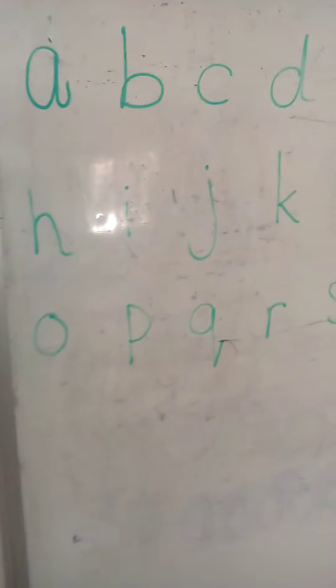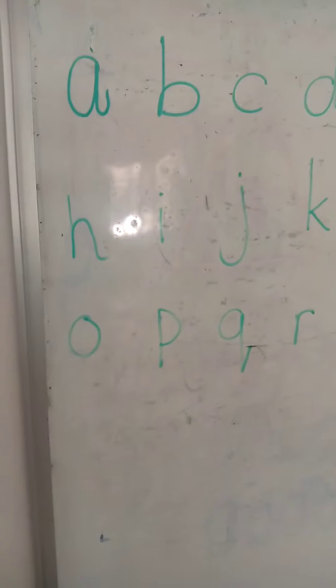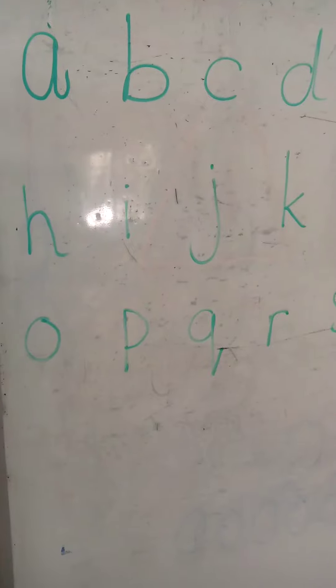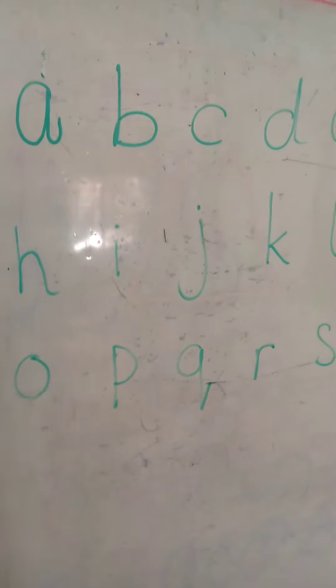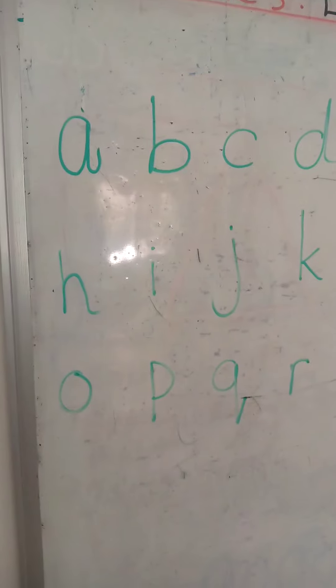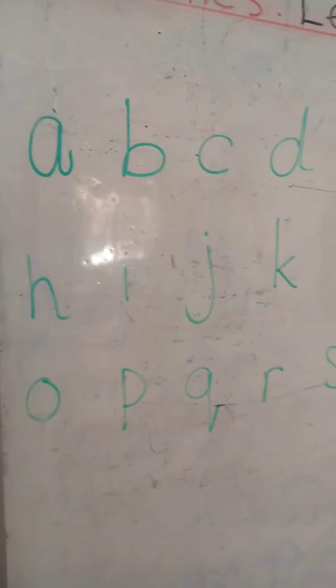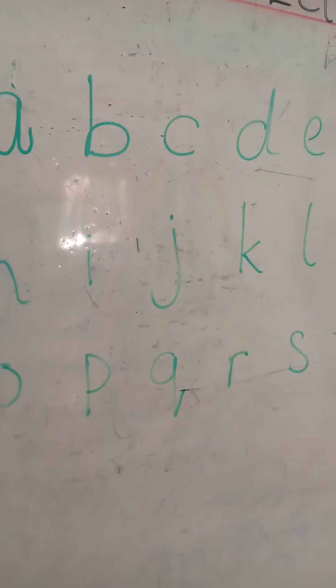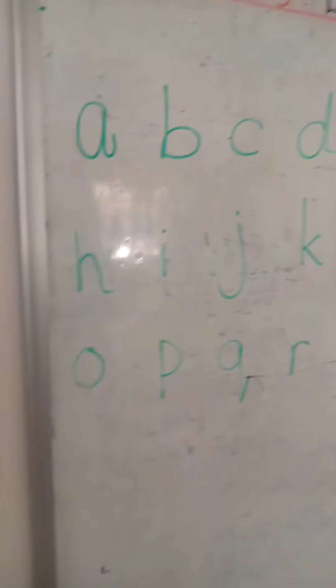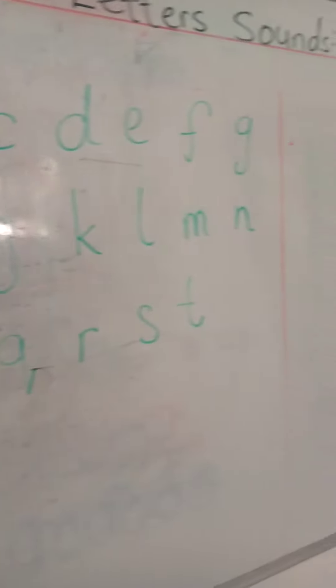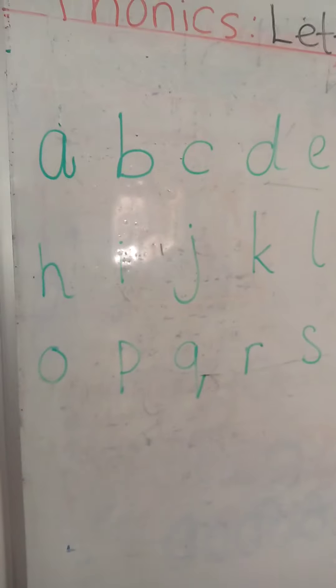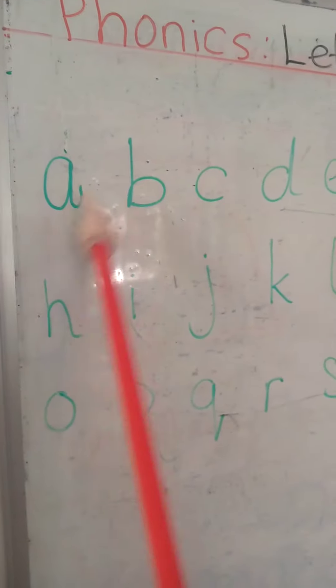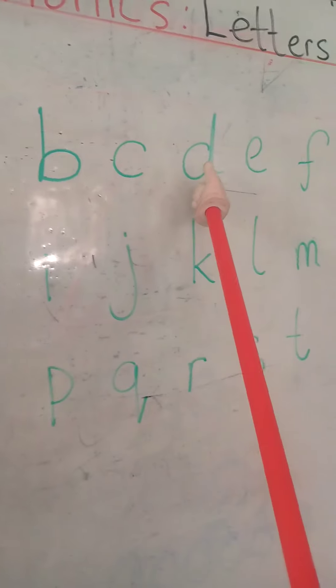The A says ah. Every letter makes a sound. The A says ah. Hello children, in our phonics lesson we'll be learning letter sounds from A to T. You can see my letters. So we're going to learn their sounds, the sound that each letter makes. This is letter A, B, C, D.